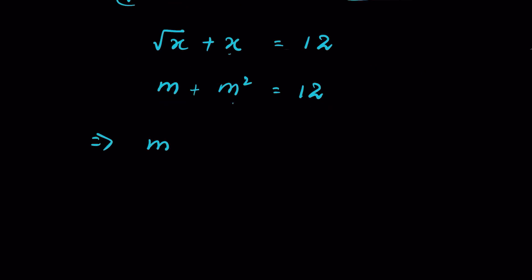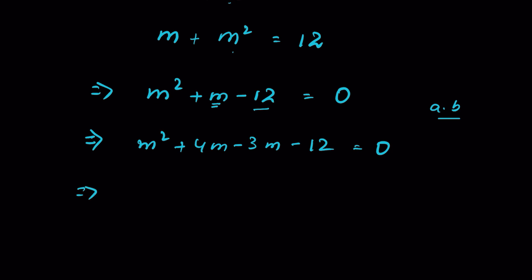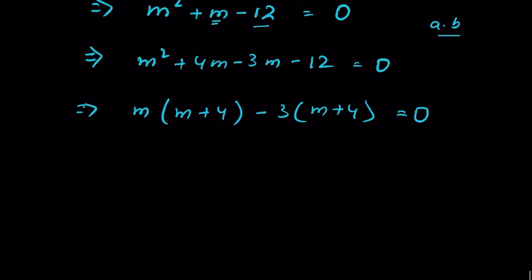Substituting into the original equation: m² plus m equals 12, so m² plus m minus 12 equals 0. This is a quadratic in m. Using the hit-and-trial factorization method, we need two numbers whose product is minus 12 and whose sum gives the middle term: m² plus 4m minus 3m minus 12 equals 0.